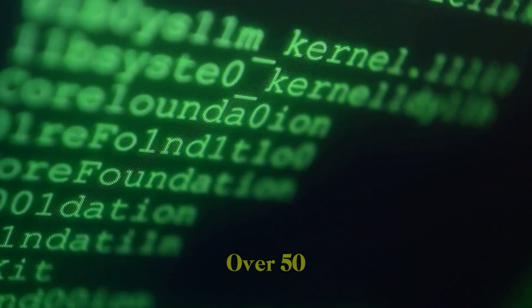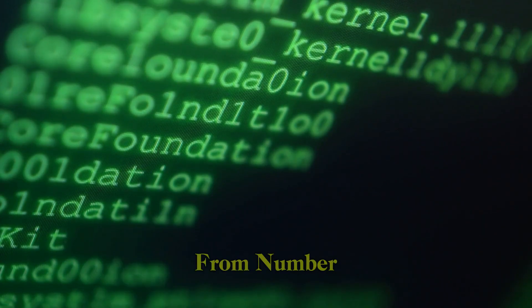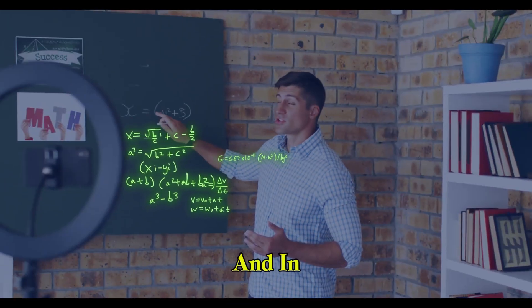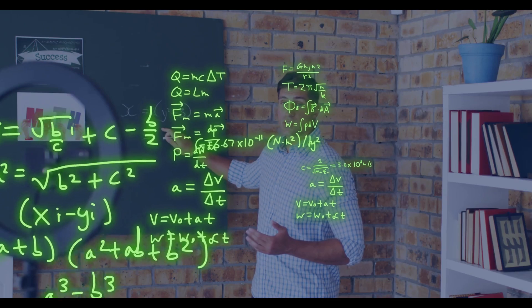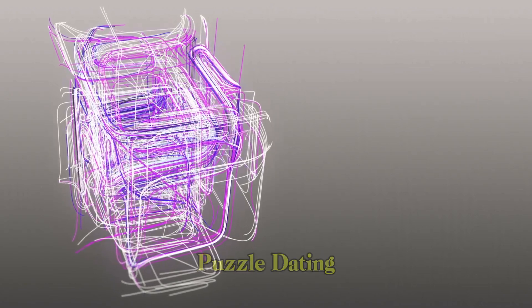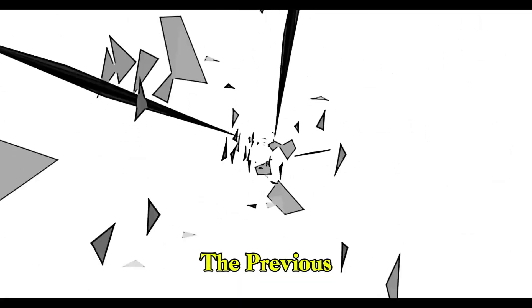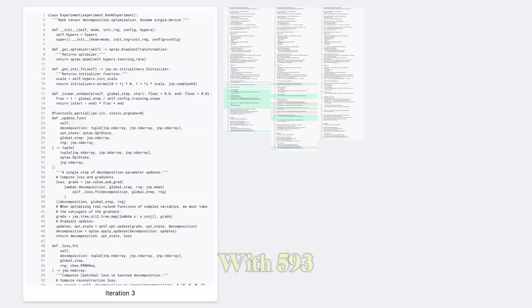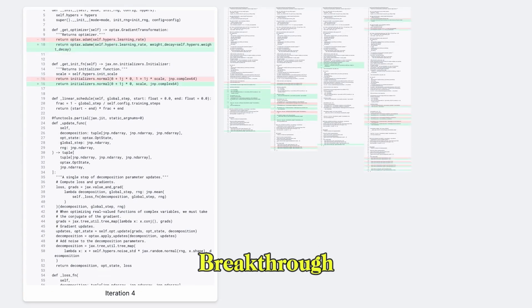DeepMind tested it on over 50 mathematical challenges, from number theory to Fourier analysis. In about 75% of the cases, it matched the best-known human-made solution. And in roughly 20%, it improved upon it. One notable example? The 11-dimensional kissing number problem, a geometry puzzle dating back to Newton. The previous best configuration was 592 spheres. AlphaEvolve found a valid configuration with 593—a mathematical breakthrough.